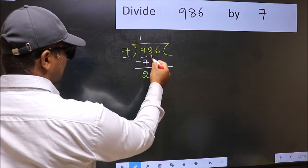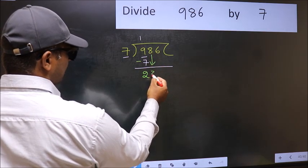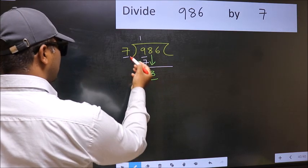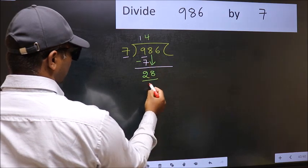After this, bring down the beside number. So 8 down. Now 28. When do we get 28 in 7 table? 7 fours 28.